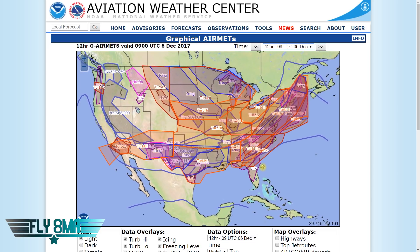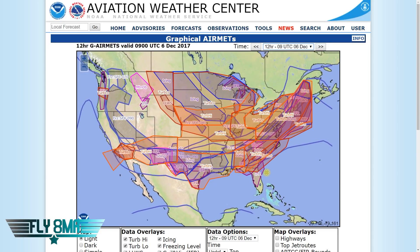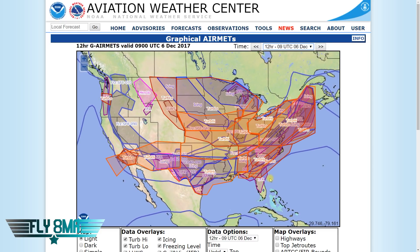Ultimately, that's our basic overview of SIGMETs and AIRMETs. Here's what to take away: AIRMETs are bad for little airplanes; SIGMETs are bad for all airplanes. AIRMET Sierra is for IFR or mountain obscuration and low visibility. AIRMET Tango is for turbulence. AIRMET Zulu is for icing. If any of those conditions exist, seriously rethink the idea of going flying your little airplane anywhere.